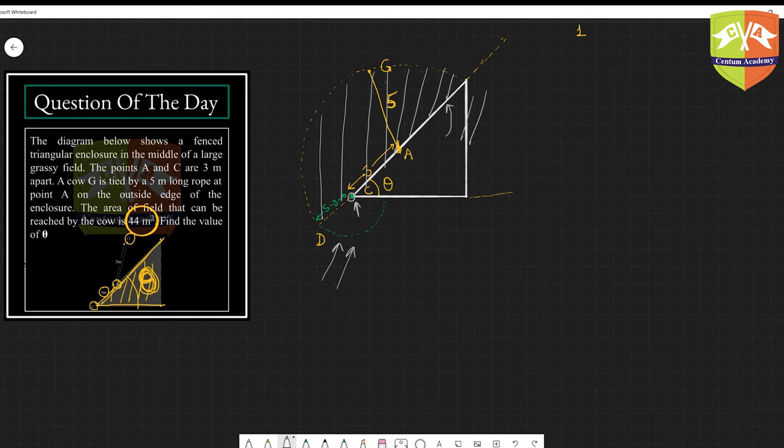You can see this is three meters and the total was five, so this will be two meters. Now if the cow wants to move, it will be sweeping area with radius two only.